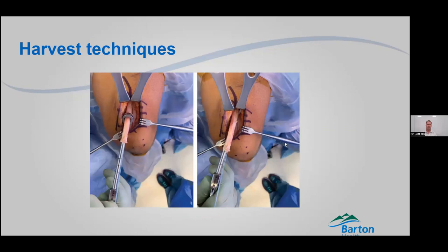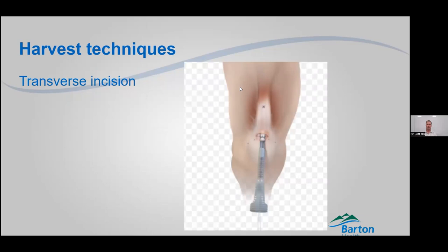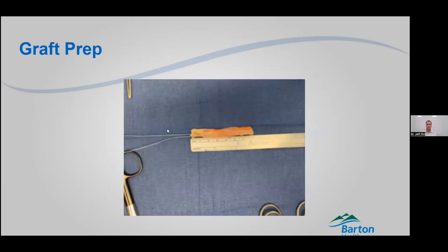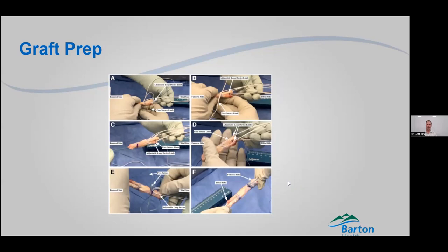Another way we can do this is using what's called a quadriceps harvester — a nice tube that gives you a nice round graft. You use this kind of like a cigar cutter to cut that off at the end. This is your graft when you're done — when you take it out, it's close to 70 millimeters in length. We'll prepare it by making marks and putting sutures through it. Here's our finished product: sutures on either side leading off.